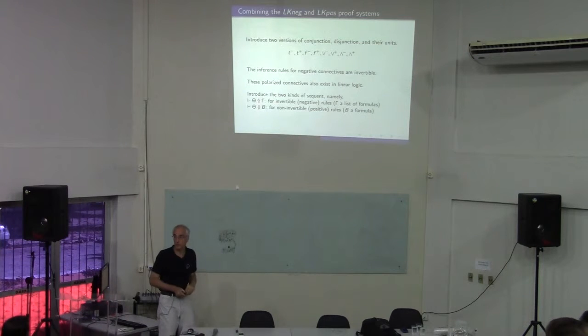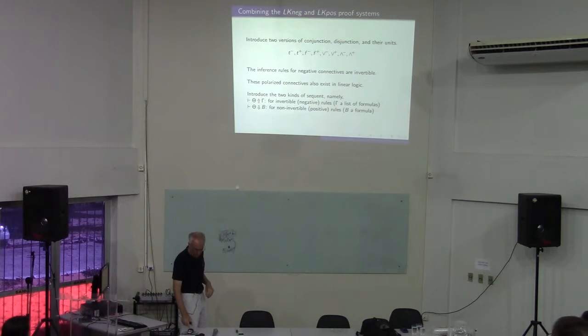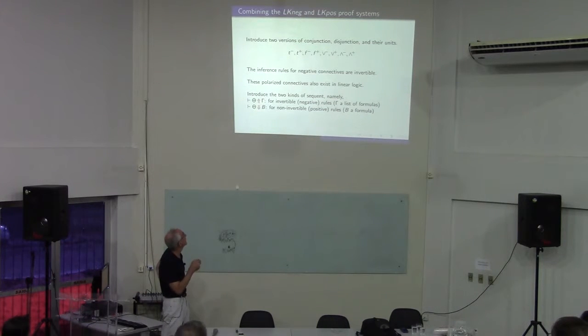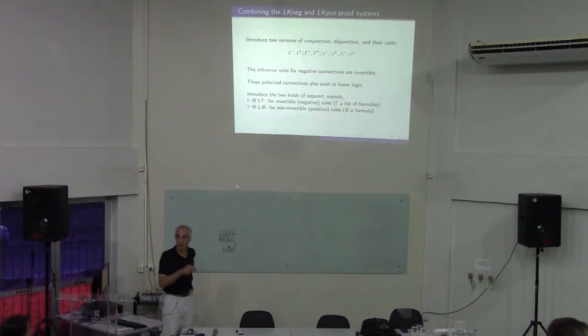Whether I put pluses or minuses will give me a difference between huge and small choice, so it's extremely important. In particular, the rules for the negative connectives are invertible. These polarized connectives do separate in linear logic, but in the classical setting they turn out to be truth functionally the same - there's only one, the two conjunctions are truth functionally the same.